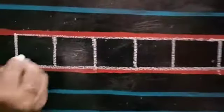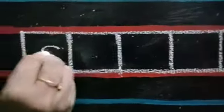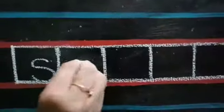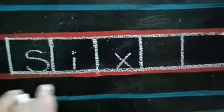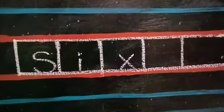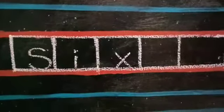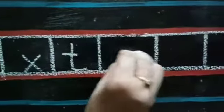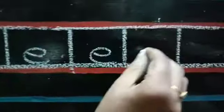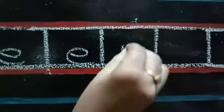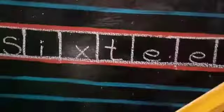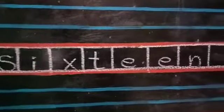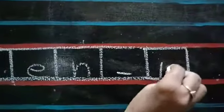Sixteen. All of you know six spelling. Easy. S-I-X. Six. Now, six you have written. You have to write teen spelling. T-E-E-N. Teen. 1-6, sixteen.